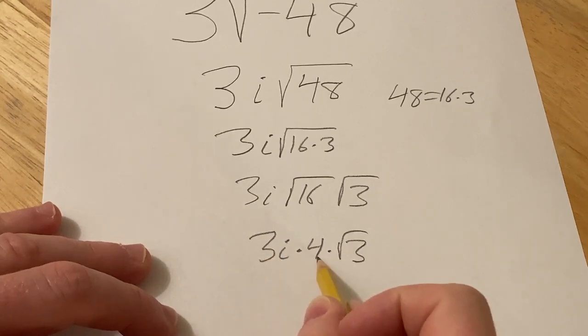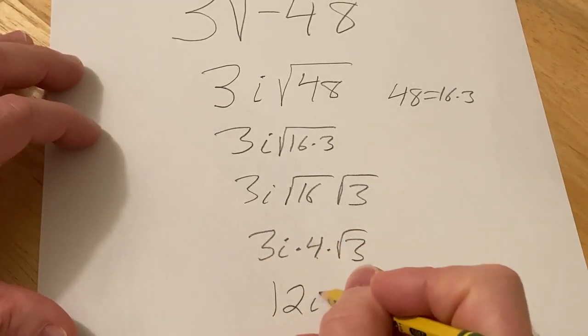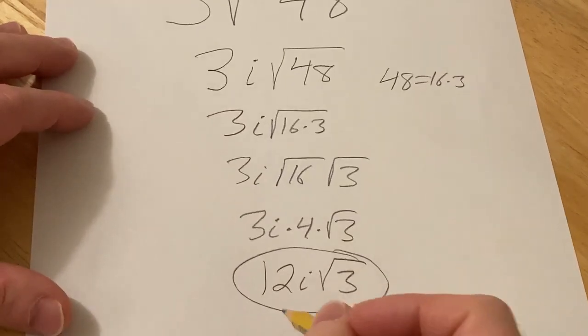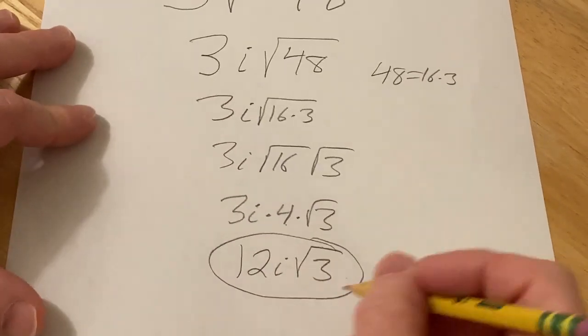And then 3 times 4 is going to be 12. This is 12i square root of 3. And that would be it. It's in the form a plus bi. You can put the i at the end like you could do this.